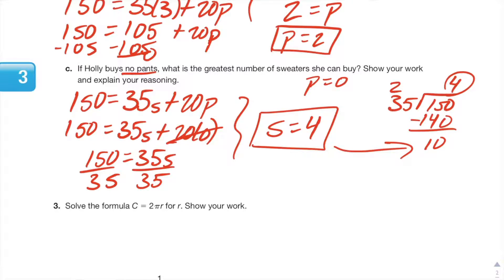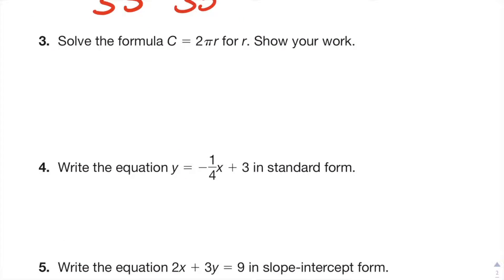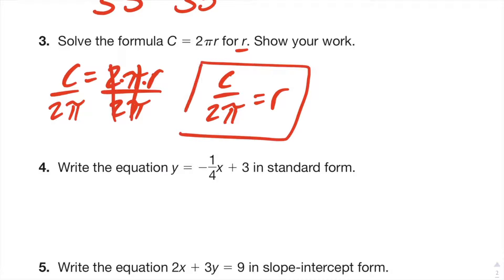Number three: Solve the formula C = 2πr for r. Show your work. Okay, this is one of those problems where you're just going to move everything around and just solve for one of the variables. In this case we're going to solve for r. So because this is all multiply, opposite of multiplication is division, we're going to divide by 2π on both sides. This will cancel, and you're done. Pretty easy.